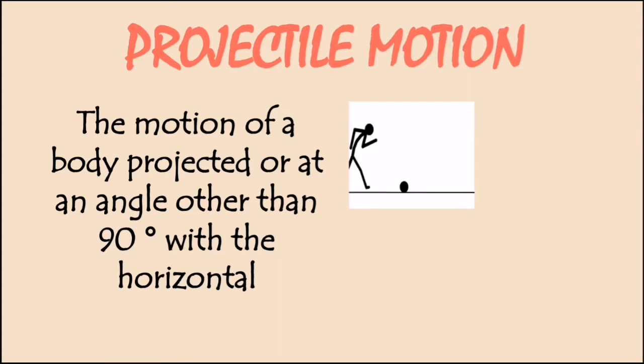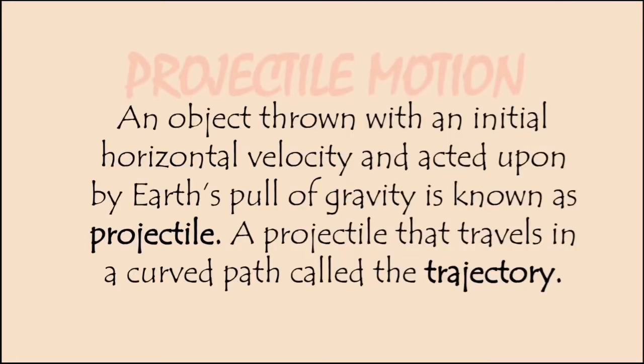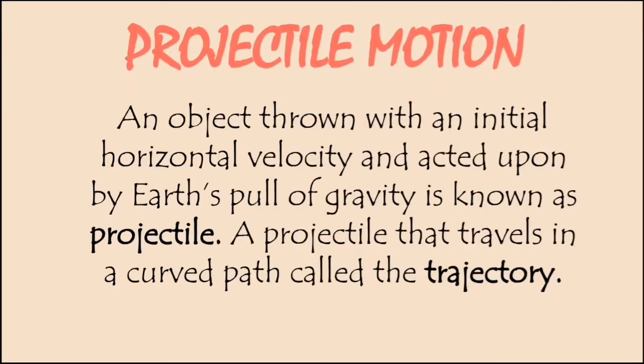Examples of projectiles include a soccer ball being kicked, a basketball that was thrown, a bullet fired, and water out of a fountain. In addition, an object shown with an initial horizontal velocity and acted upon by Earth's pull of gravity is known as a projectile, while a projectile that travels in a curved path is called trajectory.